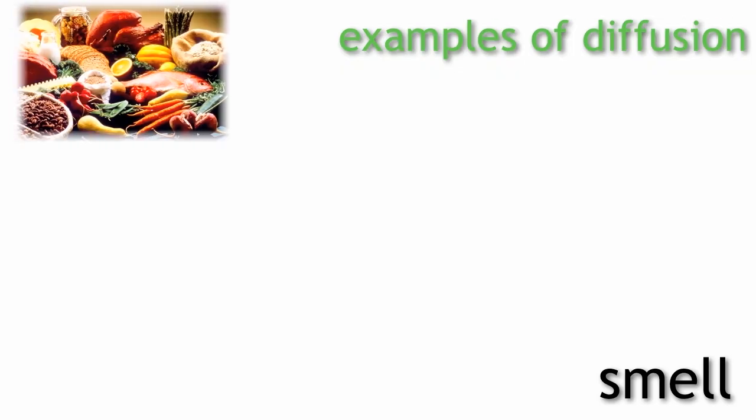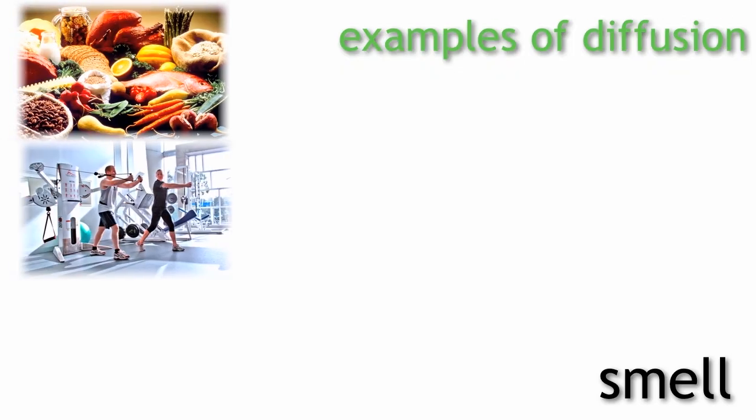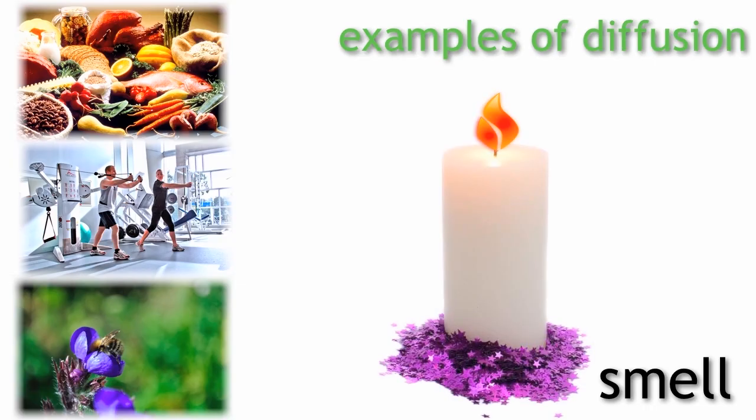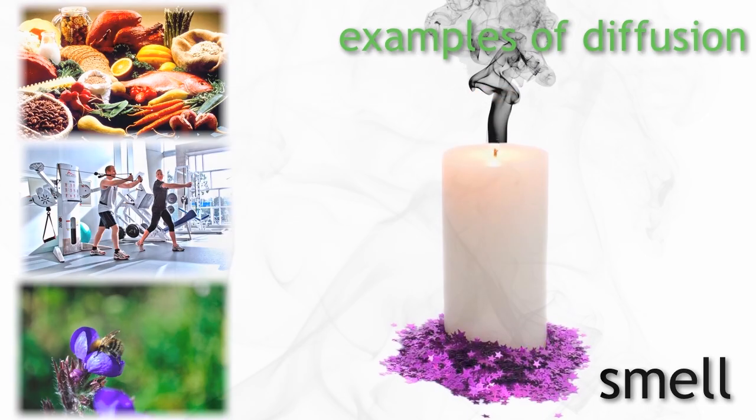Now there are many examples of diffusion but smell is probably the most obvious one. These could be food smells, body smells from other people, the scent that a plant gives off to attract pollinating insects. And the same even applies with the smoke from a candle after it has been extinguished. It spreads out and it's all due to diffusion.